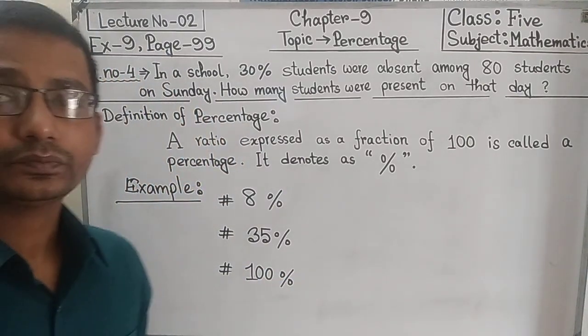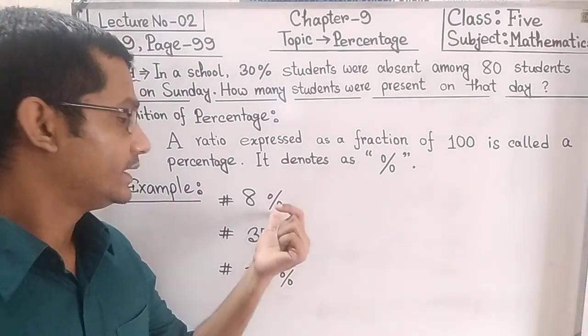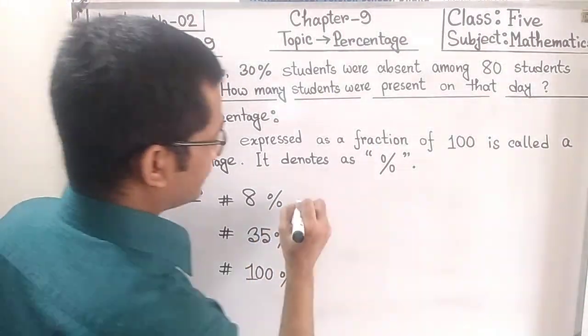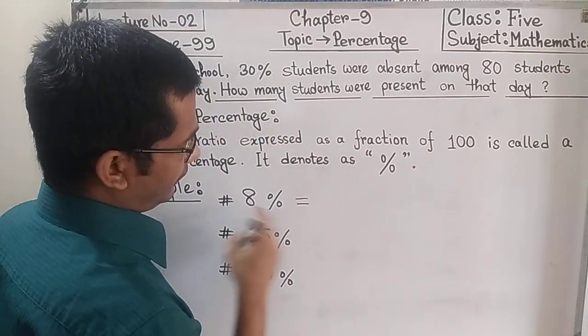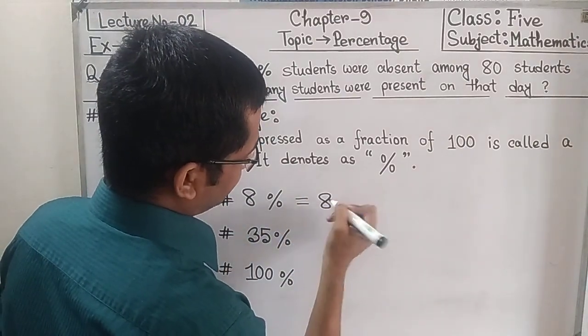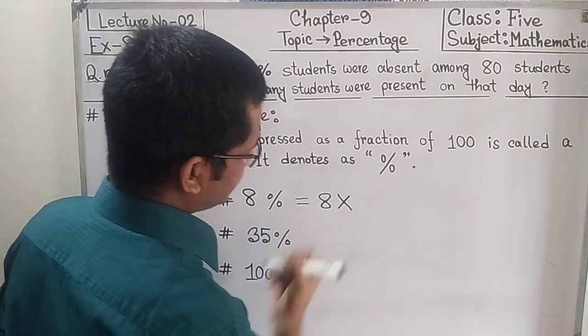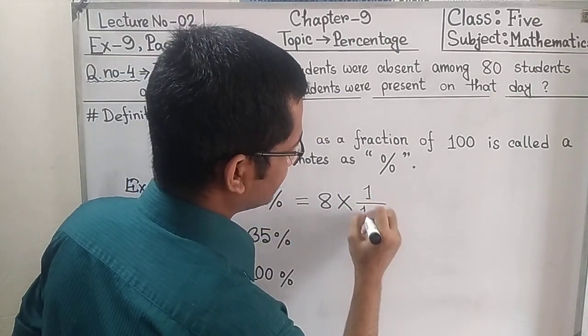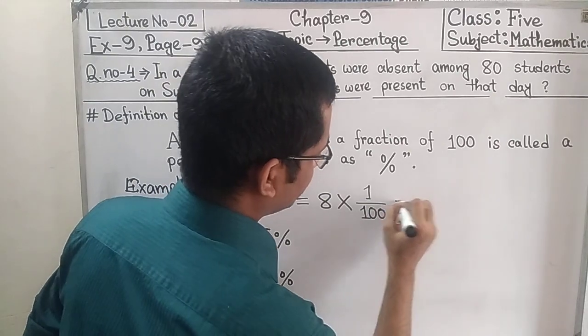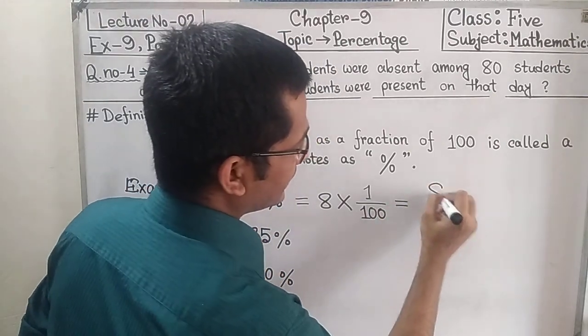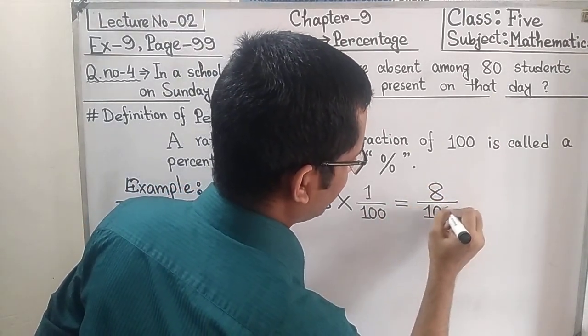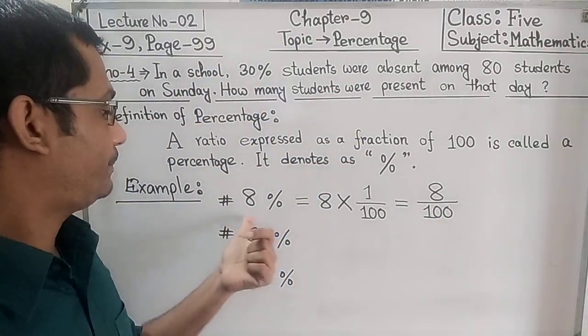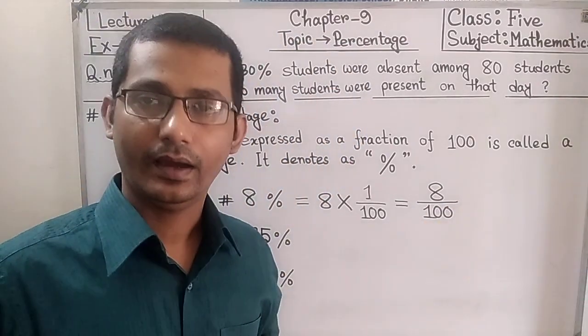Now I am going to convert this percentage into a fraction. Look at the word carefully. For 8 we have to write at first 8, then we have to put a multiplication sign, and for this percentage we have to write 1 by 100. So therefore we get 8 by 100. So 8 percent means 8 by 100.